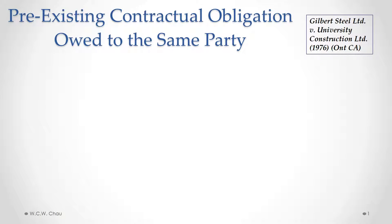The leading decision involving pre-existing contractual obligation owed to the same party is the case of Gilbert Steel and University Construction, which is a decision of the Ontario Court of Appeal.